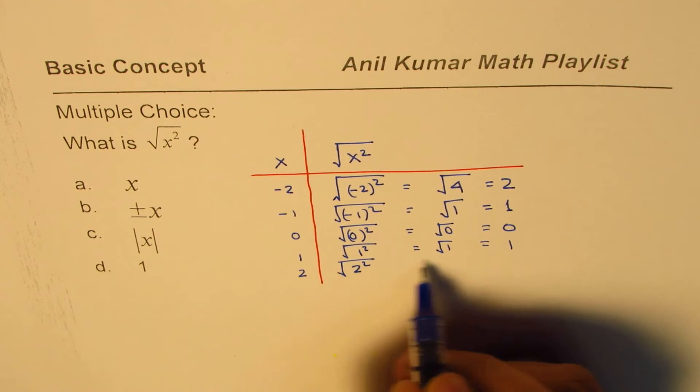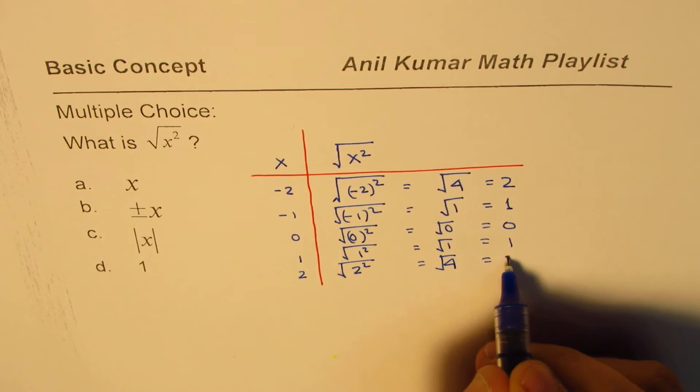And square root of 2 squared is square root of 4, which is 2. Right?